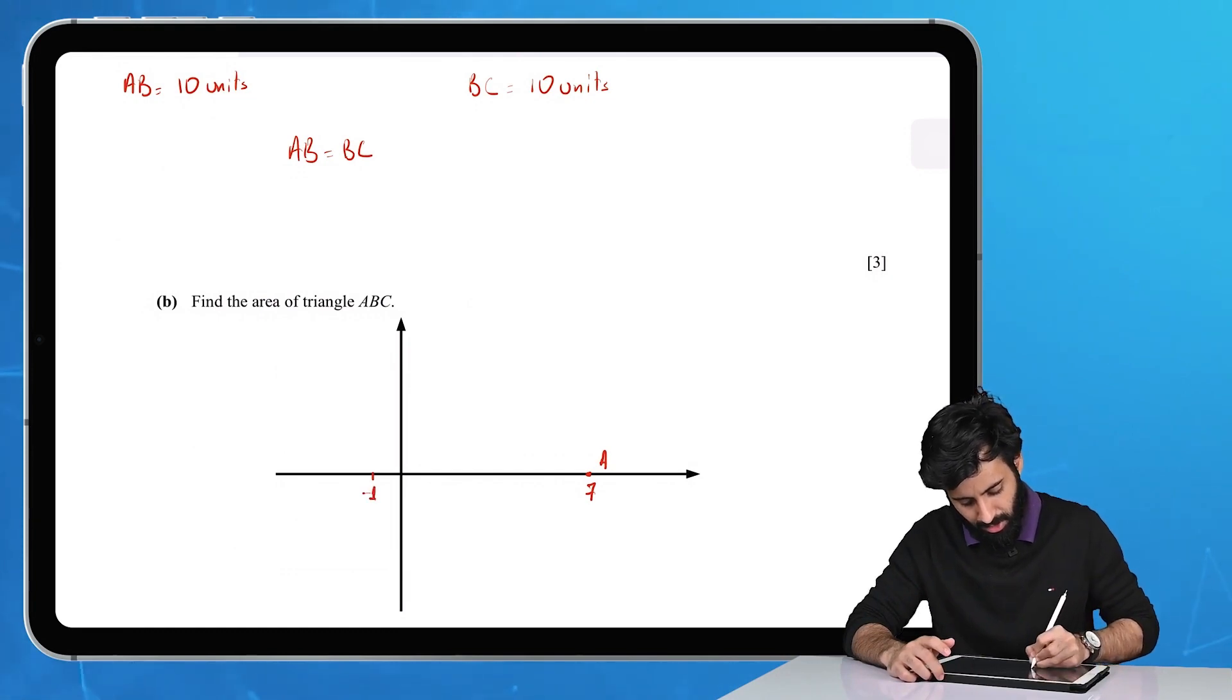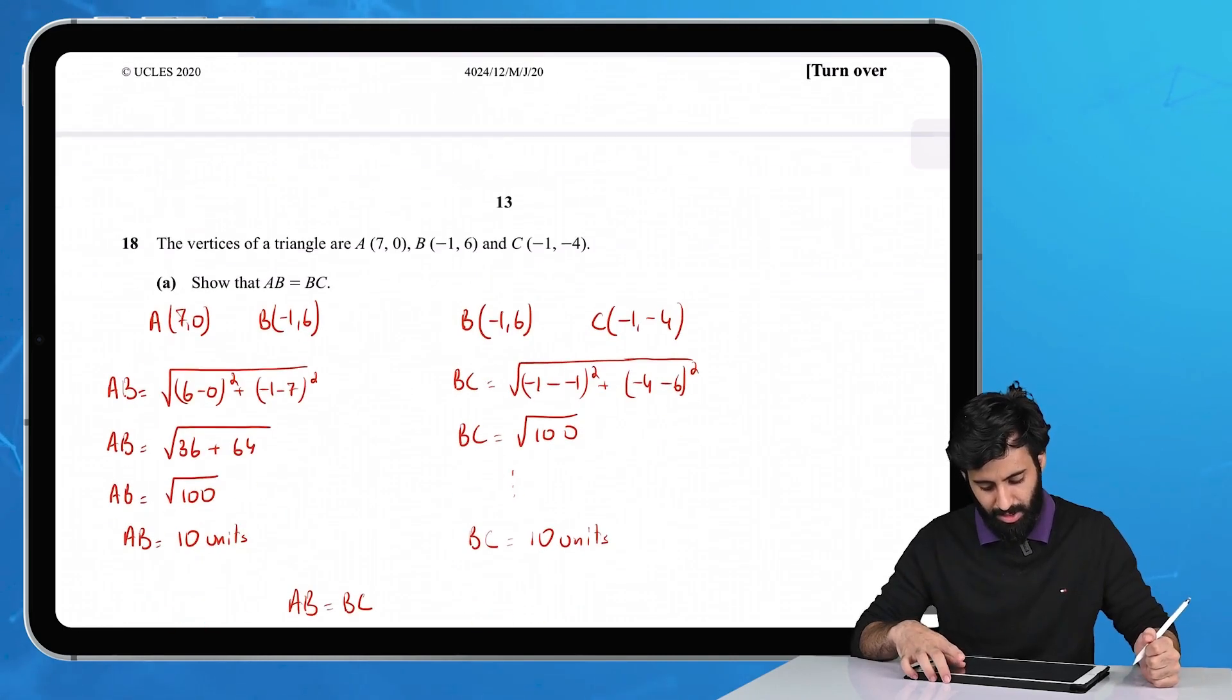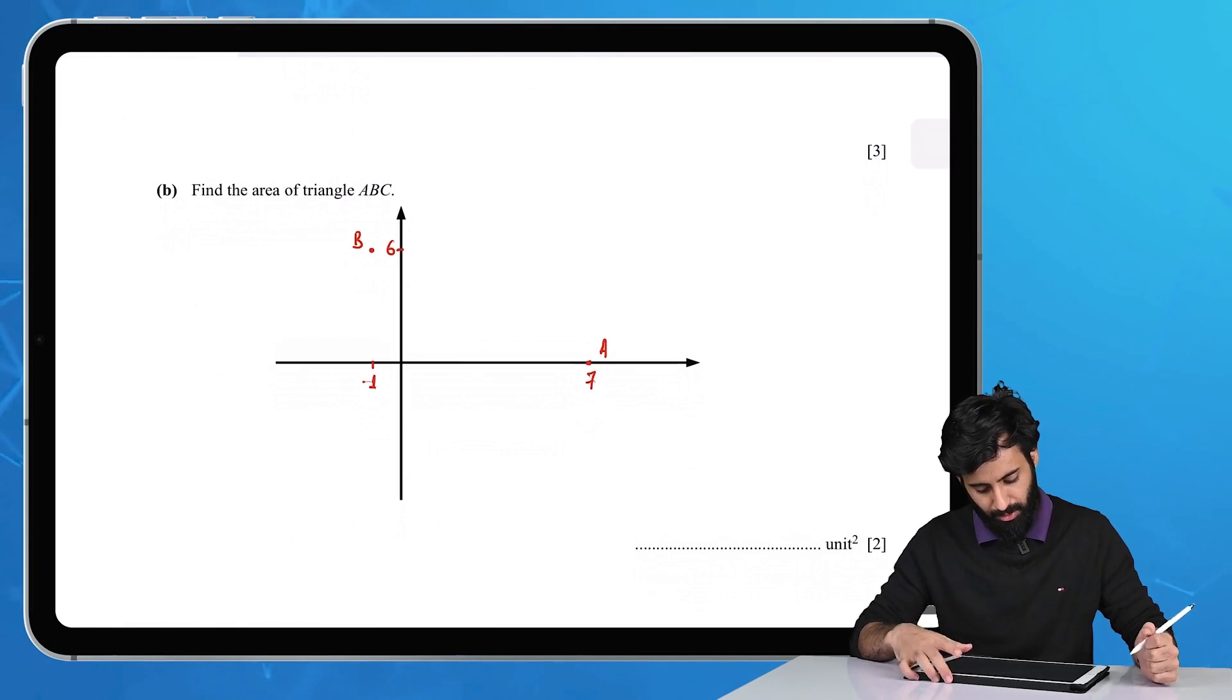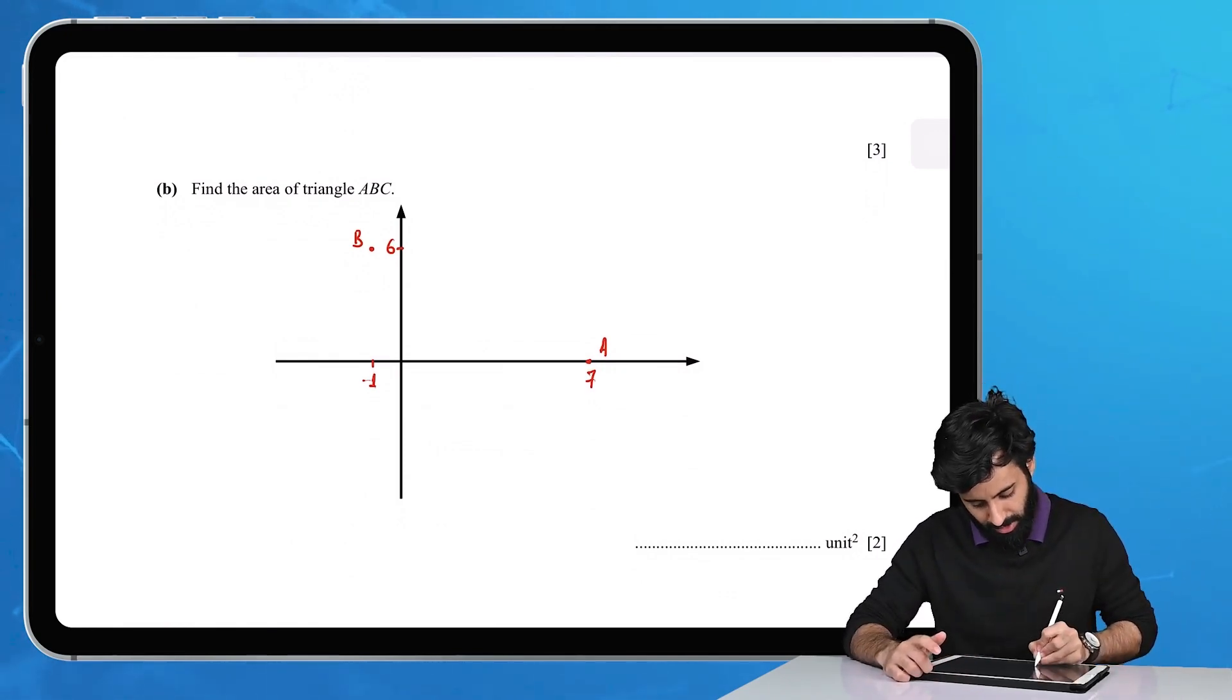Then you have C which is (-1,-4). So -1, -4 means it's going to be in line with B vertically, but -4 has to be somewhere over here. So this has to be point C.